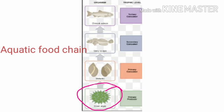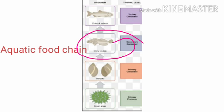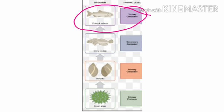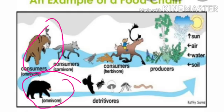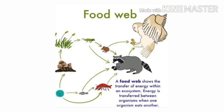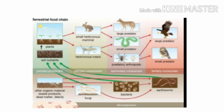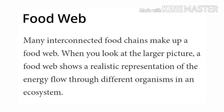Small fishes are consumed by large fishes like catfish, which may be consumed by an omnivore like man or bear. In nature, one food item may be a food source for many other animals, so many food chains may interact and interconnect with each other. These interconnected food chains are called a food web.